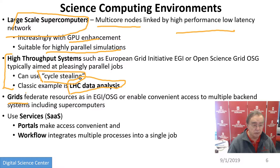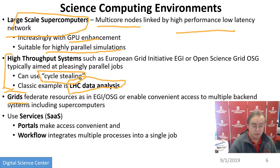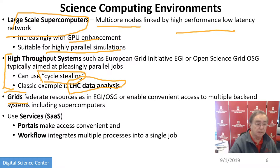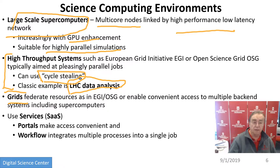Grids were a huge effort in the scientific computing arena from around 2000 to 2010, and they effectively collapsed because of clouds. Clouds were able to do what grids were doing in a much more effective fashion, and clouds were chosen by industry while grids weren't. They were basically taking the world's computers and joining them in a giant federation. We still have distributed data, but not necessarily distributed computing.